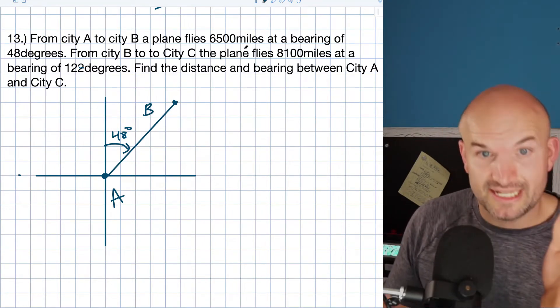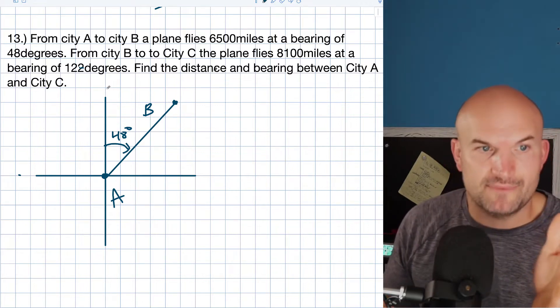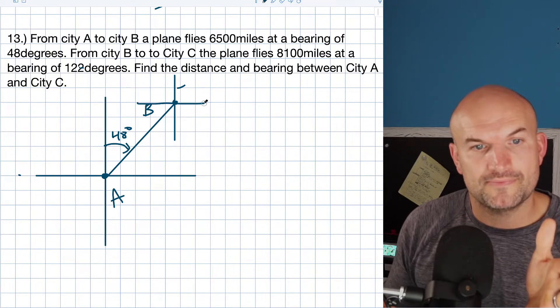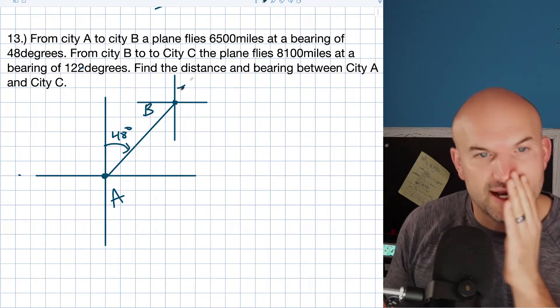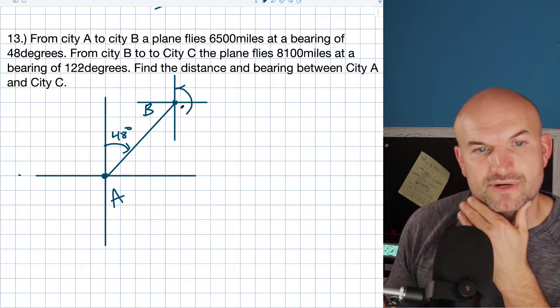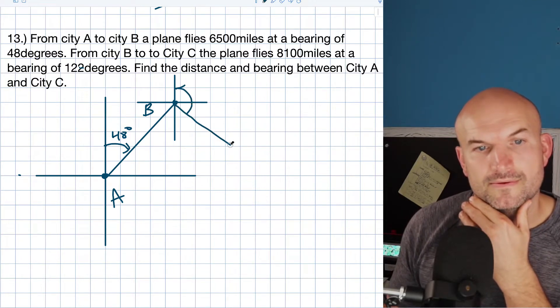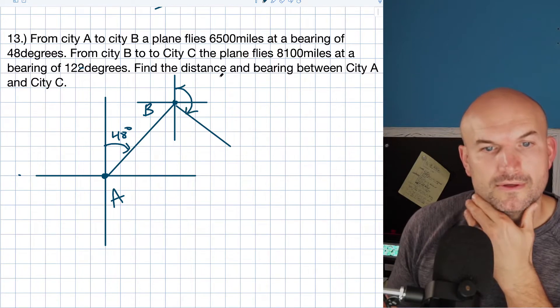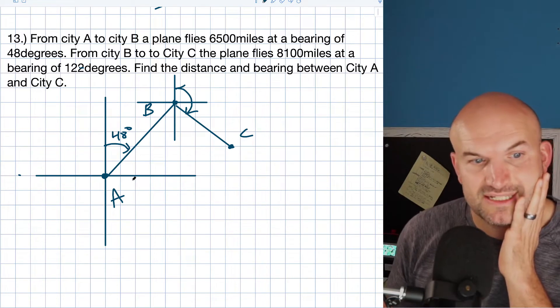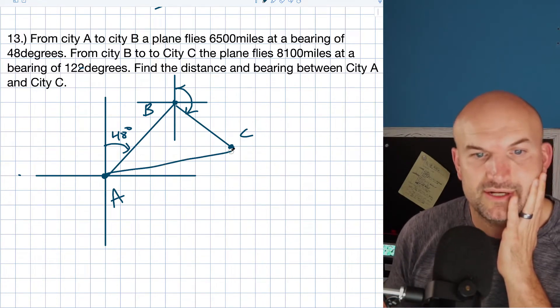Then it says from B to C it flies 8,100 miles at a bearing of 122 degrees. So now what we're going to do is I'm going to create another coordinate grid. And now I'm going to do 122 degrees. So 122 degrees is going to be probably somewhere down there. And that's going to take me to C. And that says find the distance and bearing between city A and C. Great. So that's going to be here to here.